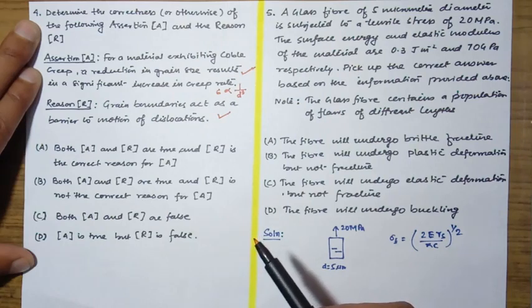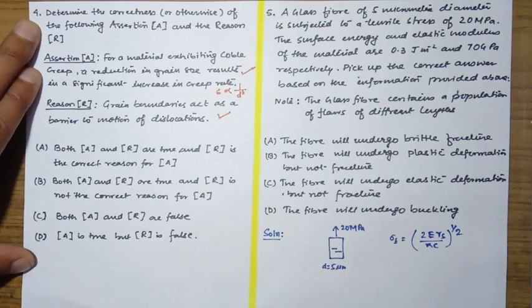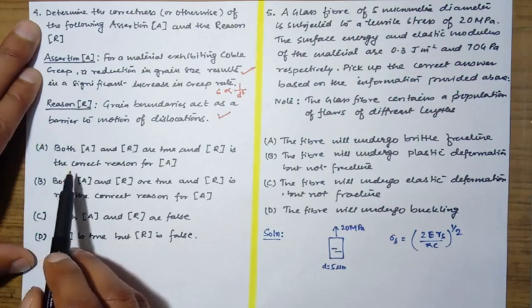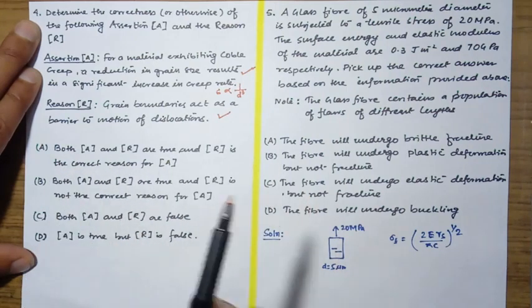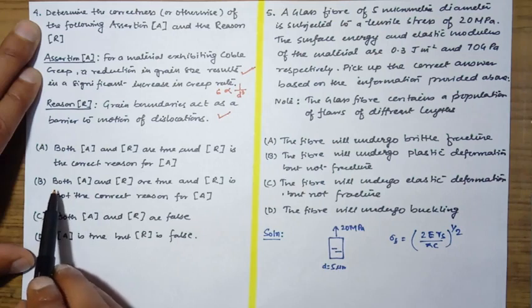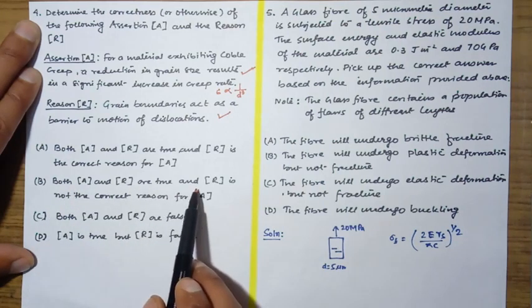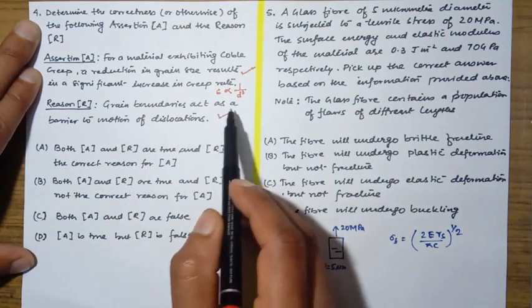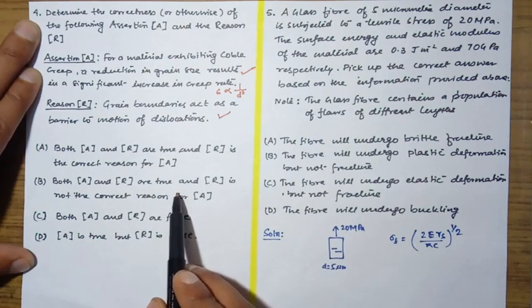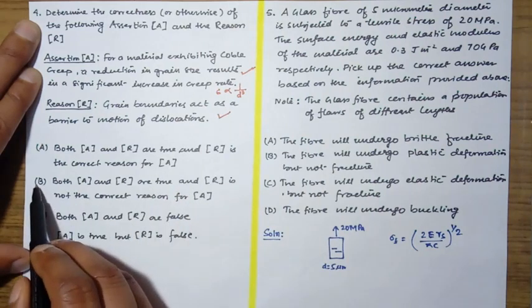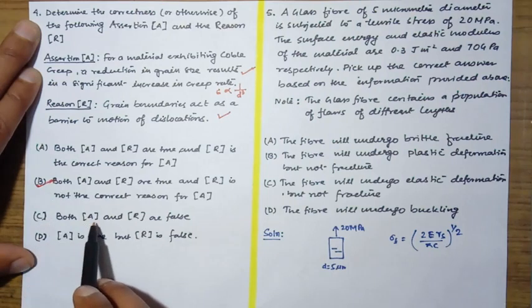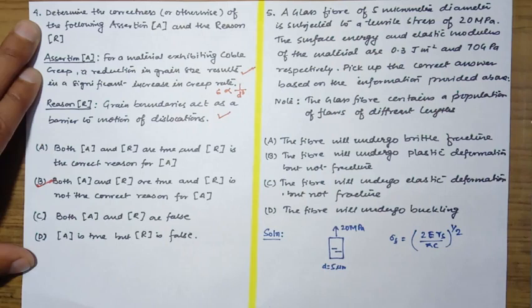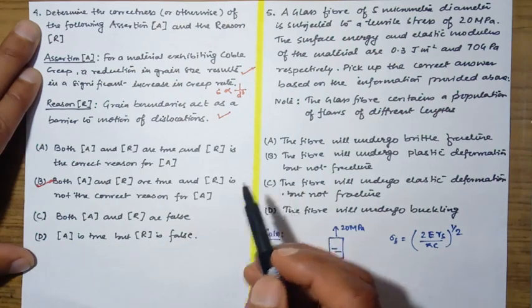So first let us check other options also. Both A and R are true and R is not the correct reason for A. Since both the statements are true but R is not the correct reason, so the answer will be this. If you check this statement, both A and R are false - no, both these statements are true. A is true and R is false - no, this is also incorrect.